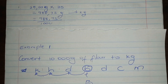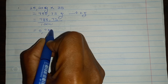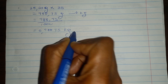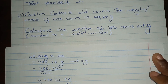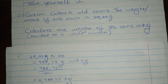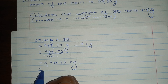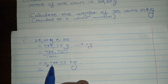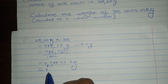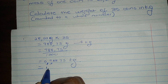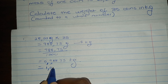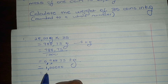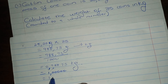988.75 divided by 1000 — that's three zeros — gives us 0.98875 kilograms. But we're not done: they said the answer must be rounded to a whole number, meaning no decimal. Looking at the digit after zero, the nine means we round up, so zero becomes one. The answer is one kilogram.